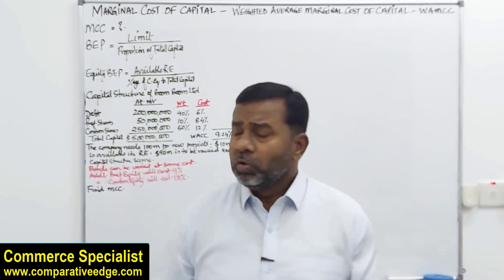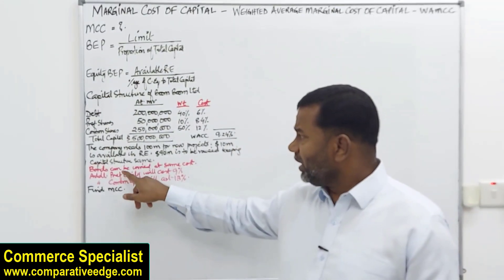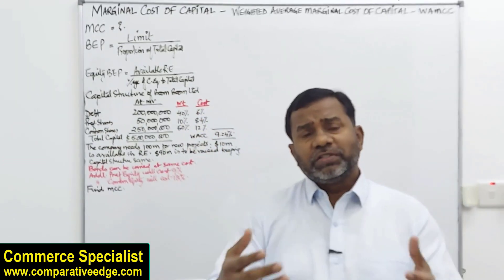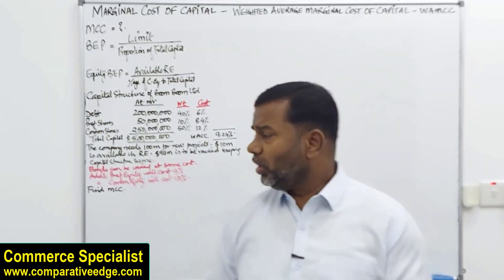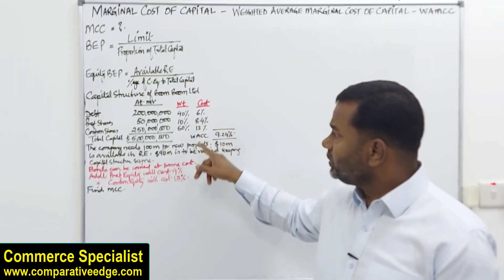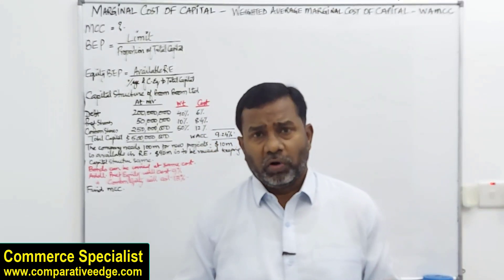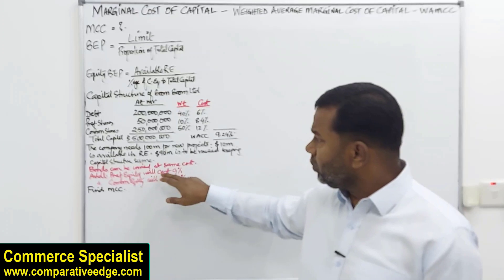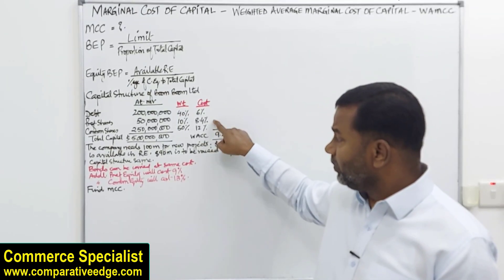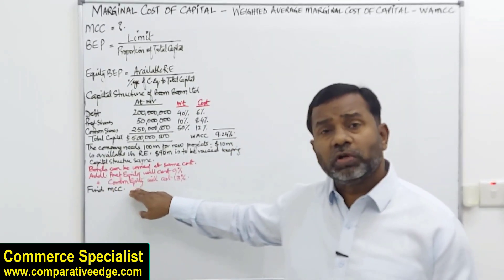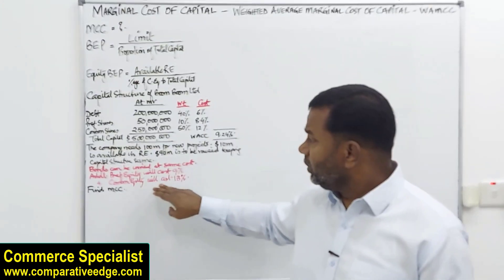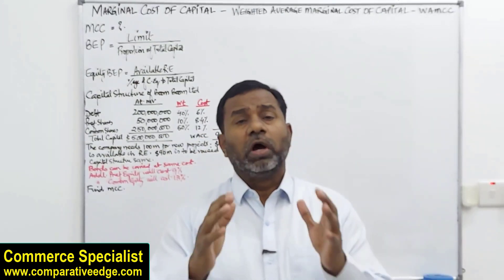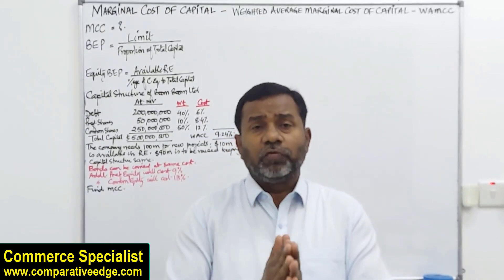As discussed earlier, the moment we go for additional funds the cost is different. It is assumed that bonds can be raised at the same cost of 6%. Additional preference equity will cost 9%, not 8.4%. Additional common equity — also known as common stock or ordinary shares — will cost 13%, not 12%. So we need to first find the limit beyond which the marginal cost of capital will change, and second, determine which source of finance to use.